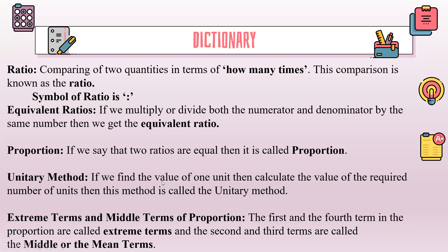Unitary method: if we find the value of one unit, then calculate the value of the required number of units, this method is called the unitary method. Extreme terms and middle terms of proportion: the first and the fourth term in the proportion are called the extreme terms, and the second and the third terms are called the middle or the mean terms.